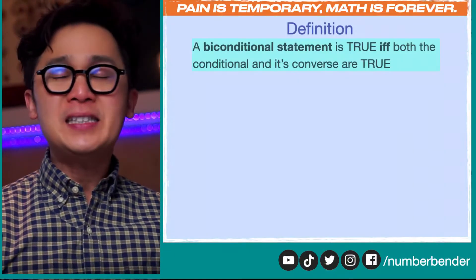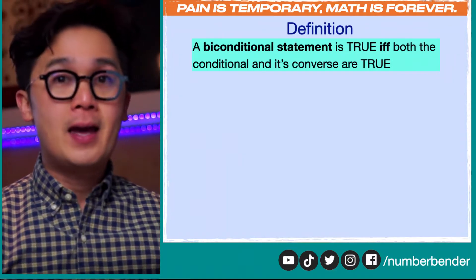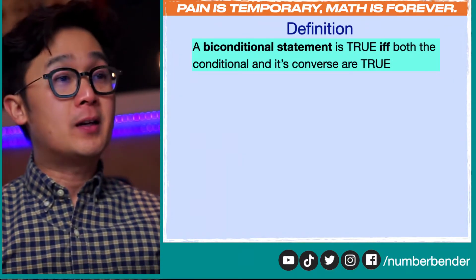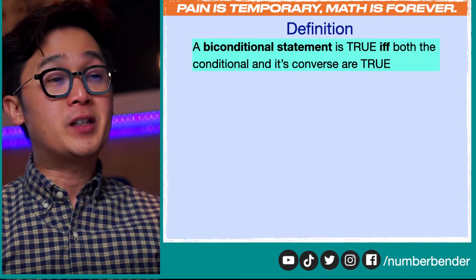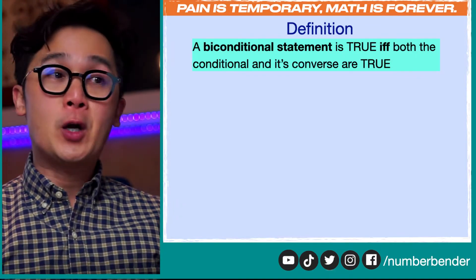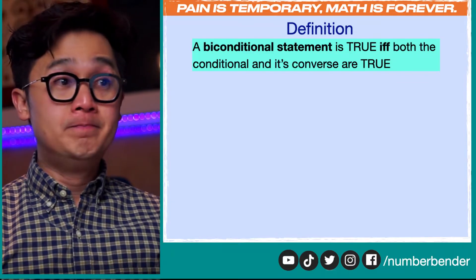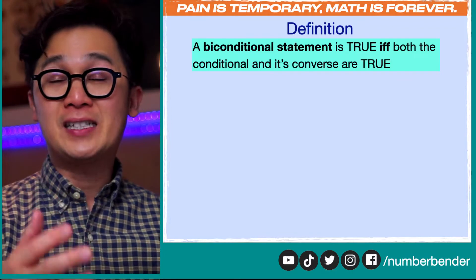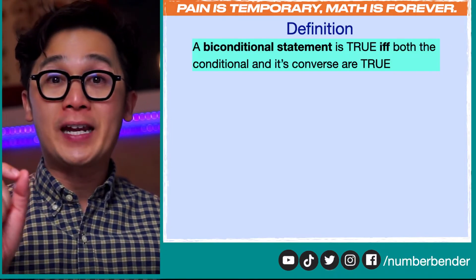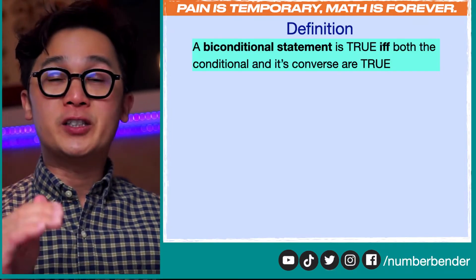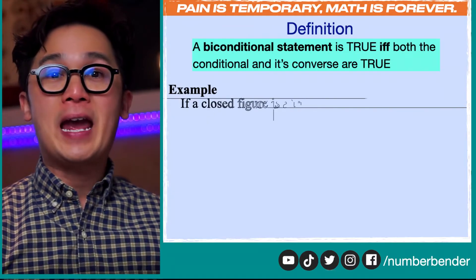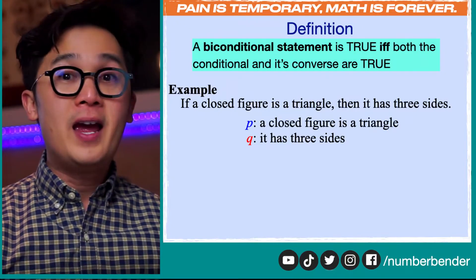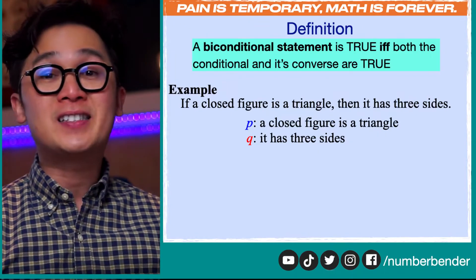Now let's see when we can classify a biconditional statement as true. By definition, a biconditional statement is true if and only if both the conditional and its converse are true. That's how we classify a true statement in biconditional form. Let's say we have this biconditional statement: if a closed figure is a triangle, then it has three sides.